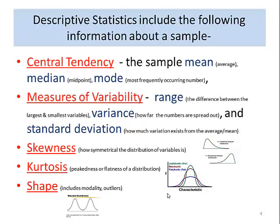We would also measure the variability in our sample. The range, which is the difference between the largest and the smallest variable. The variance, how far the numbers are spread out, and the standard deviation, which is how much variation exists from the average and the sample mean. Skewness will let us know how symmetrical the distribution of the variables are for each one of those categories. And kurtosis will let us know if our data is peaked or flat. If it's peaked, then a lot of the sample is very similar. If it's more flat, then we have a wide distribution of different subjects in our sample.